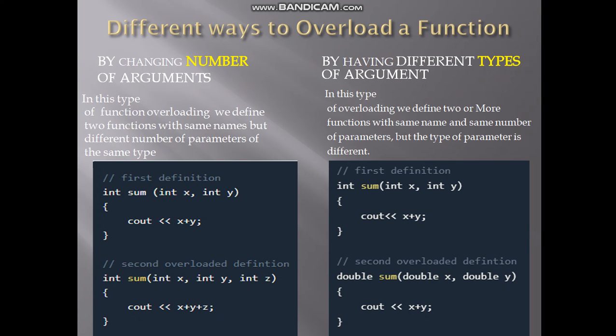The concept of function overloading is that you will have two or more functions in the same class with the same name. You can implement this concept of overloading in two different ways: one by changing the number of arguments, and the other by having different types of arguments.